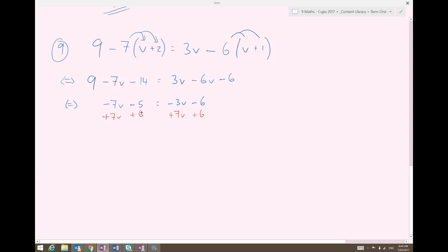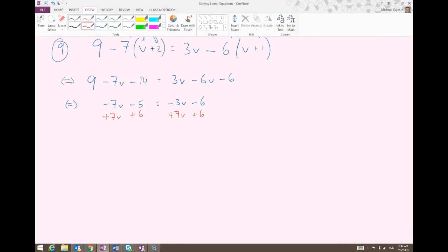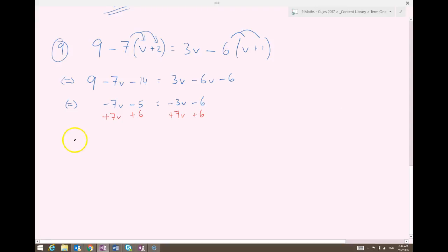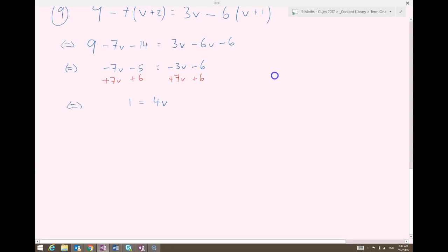So as long as you're showing your working there, it shouldn't be too bad. So keeping track of what's happening on each side, showing your working, just makes it easier for you and easier for the person marking your exams. So negative 7v plus 7v, we knew they were going to get rid of each other. Negative 5 plus 6, that goes to 1. That's looking a lot nicer already. On the right-hand side, negative 3v plus 7v. Negative 3 plus 7 is 4. So that's going to be 4v. And negative 6 plus 6, cancel out.